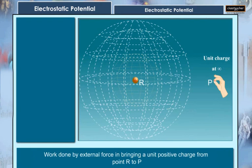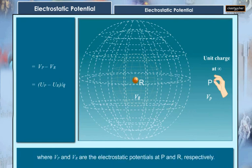Work done by external force in bringing a unit positive charge from point R to P is equal to Vp minus Vr which is equal to Up minus Ur upon Q, where Vp and Vr are the electrostatic potential at P and R respectively.